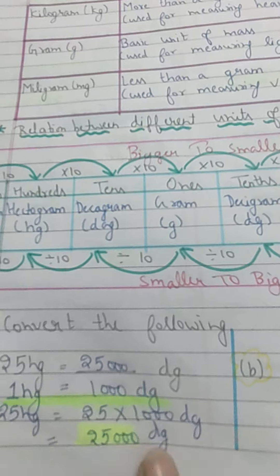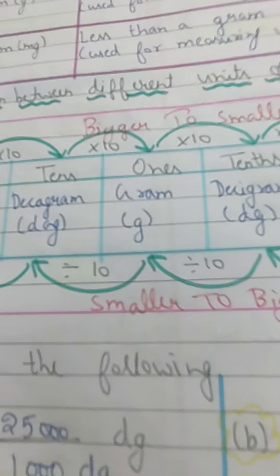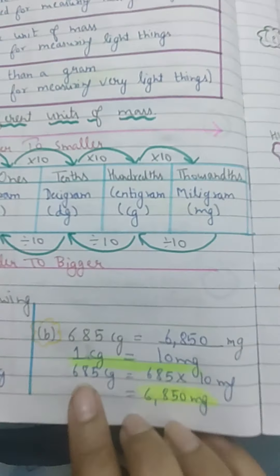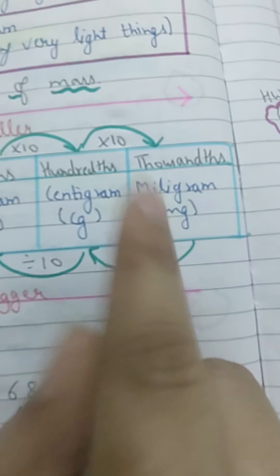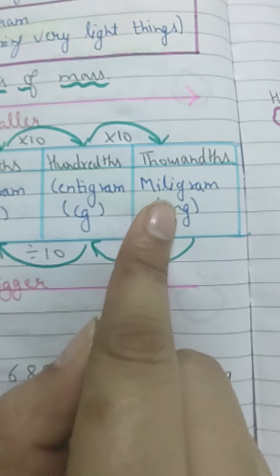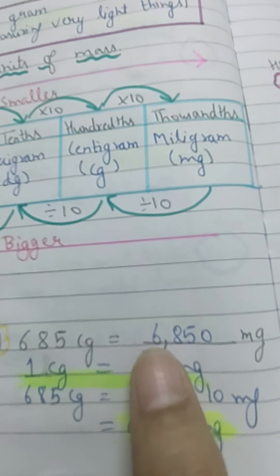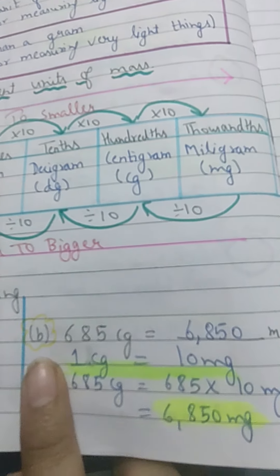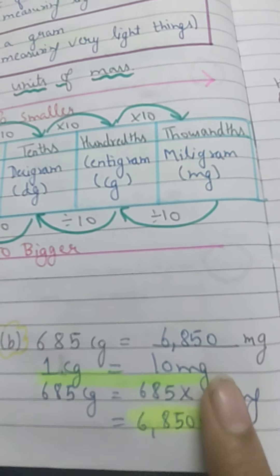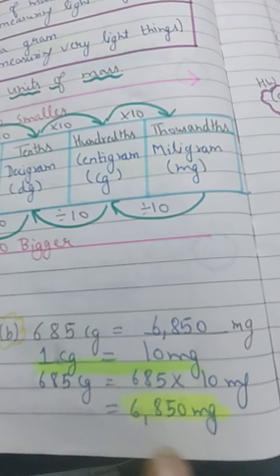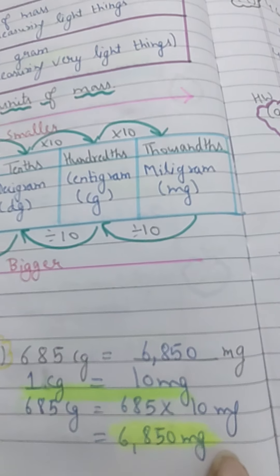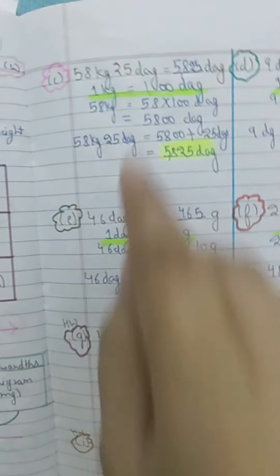Next: 685 centigram to milligram. From centigram to milligram is only one jump, and we are going from bigger to smaller, so we multiply by 10. Therefore, 1 centigram equals 10 milligrams. So 685 × 10 = 6,850 milligram.